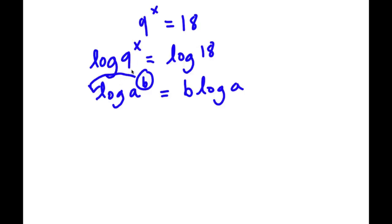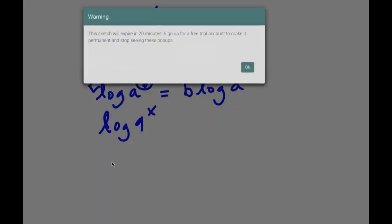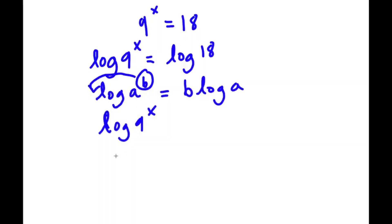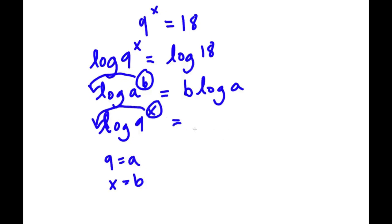So I'm going to use this property on log 9 to the power of x. We can think of 9 as a and x as b. So I'm going to move our x to the front of the logarithm. This is going to equal x times log a.